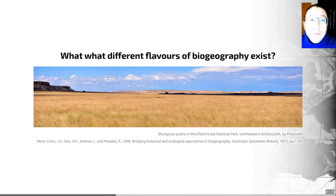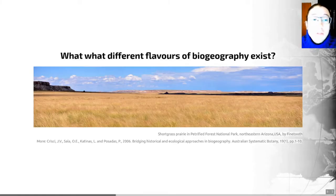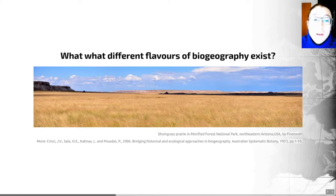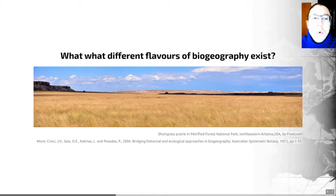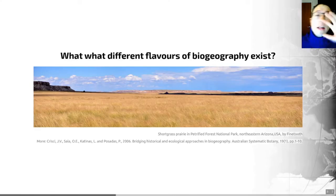In contrast, historical biogeography concerns evolutionary processes occurring over millions of years on the scales of continents. This distinction is illustrated by the recognition that two locations with very similar abiotic characteristics — such as temperature and precipitation — may have identical functional groups of organisms, yet have quite different species compositions, with radically different species making up those communities.